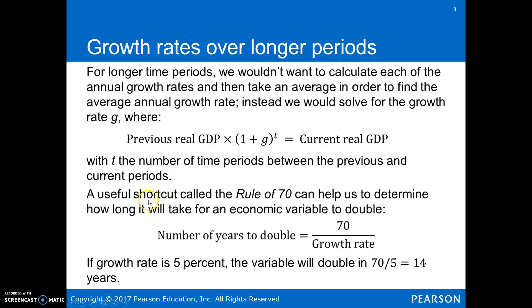A helpful rule is the Rule of 70: the number of years for any variable to double equals 70 divided by the growth rate. So if real GDP is growing at 5% a year, 70 divided by 5 equals 14 — meaning real GDP would double in 14 years. In less than a generation, purchasing power could double if the growth rate were 5% over that period.